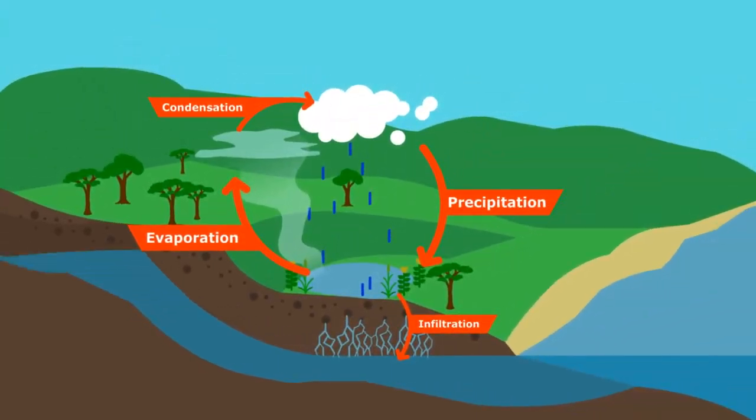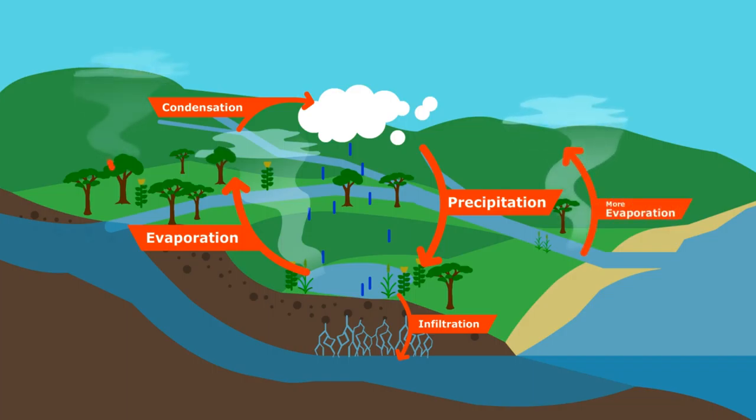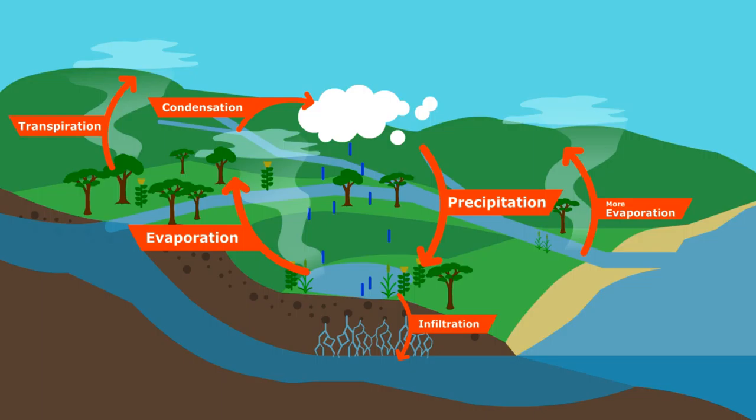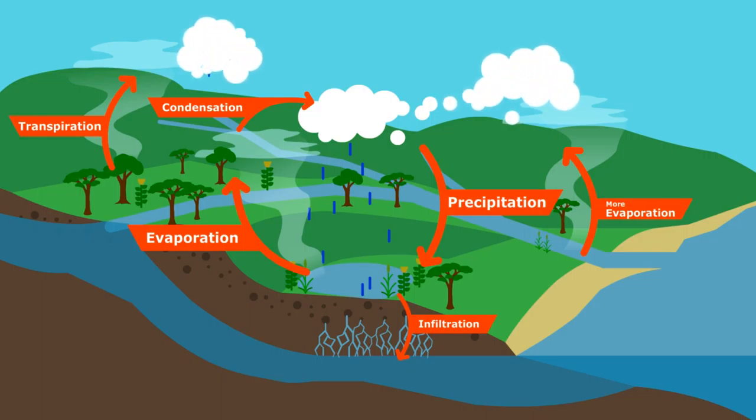This groundwater wells up and feeds springs and streams, which allows even more life to thrive. There is then much more water to evaporate from the saturated ground, or to transpire through plants. This abundance of water vapor allows for more consistent rainfall.